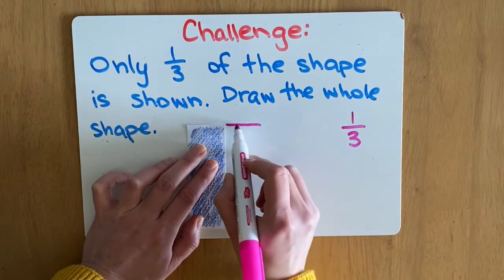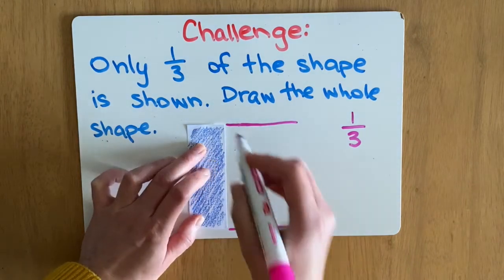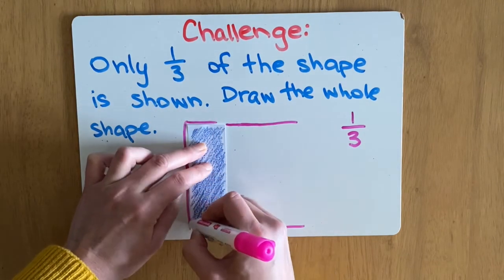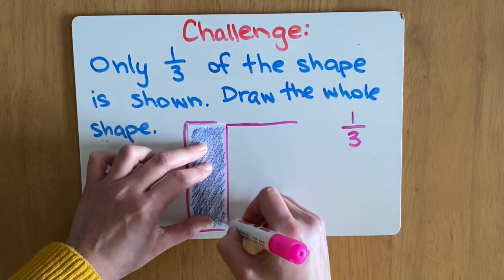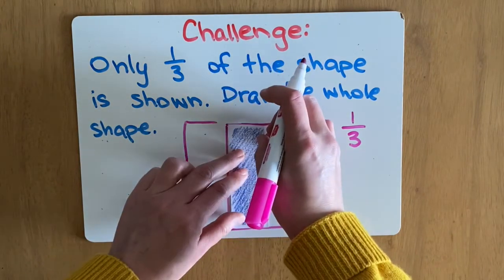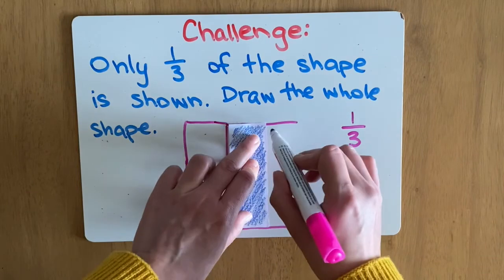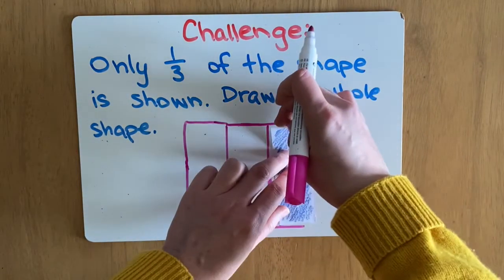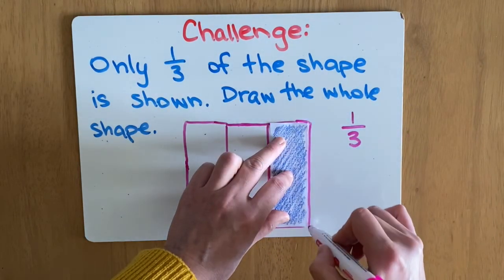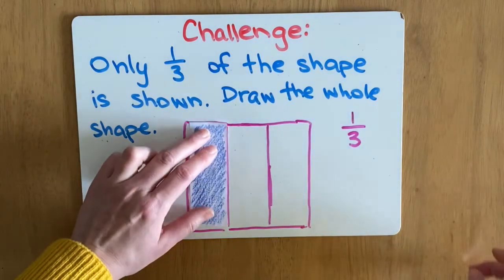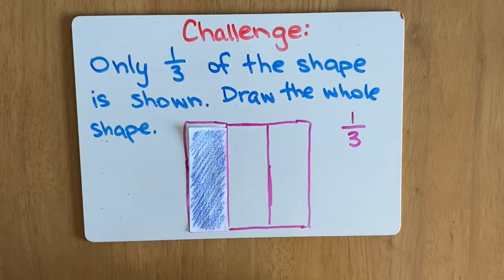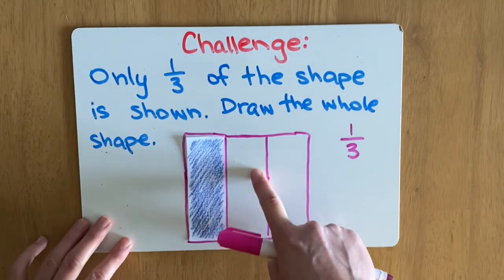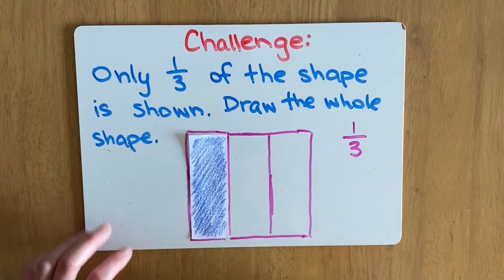So let's draw the rest of the shape — it goes out to here. I'm going to take this bit and put it here so I can see that it's the same size, then put this one here. There we go. I just added two more parts to make it the whole. This is one-third, this is another third, and this is another third. So here we have completed the drawing.